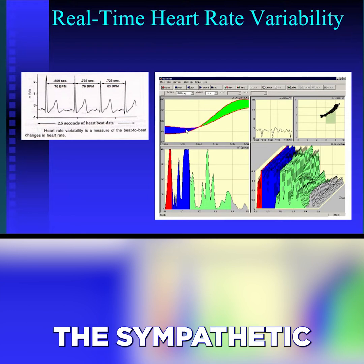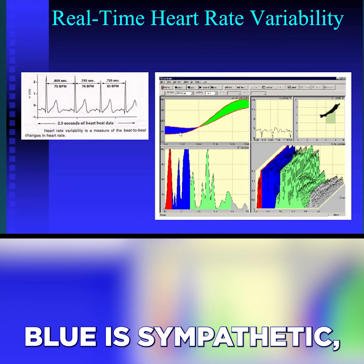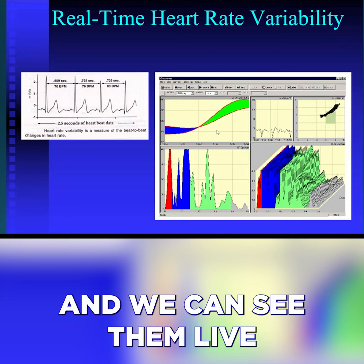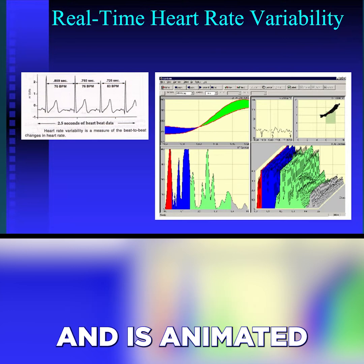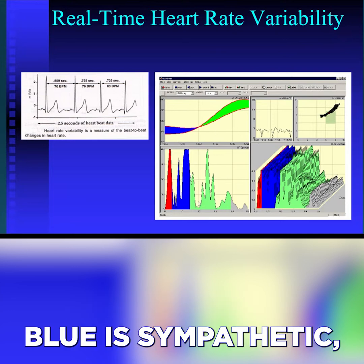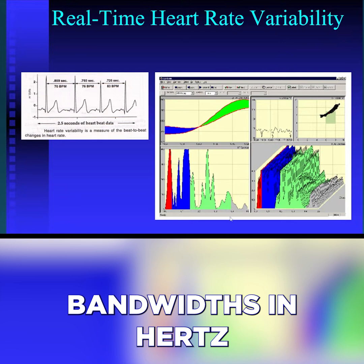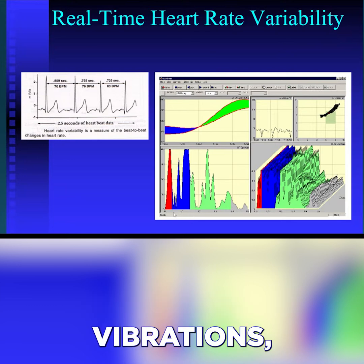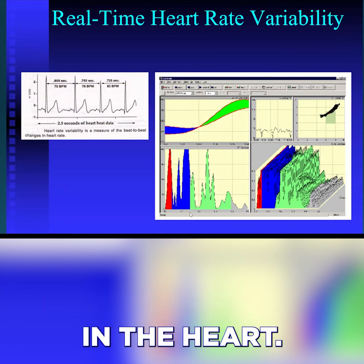Now we can see the sympathetic and the parasympathetic — blue is sympathetic, green is parasympathetic. We can see them live as this screen moves forward and is animated. These are frequency bandwidths in hertz in the heart: electromagnetic vibrations in the heart.